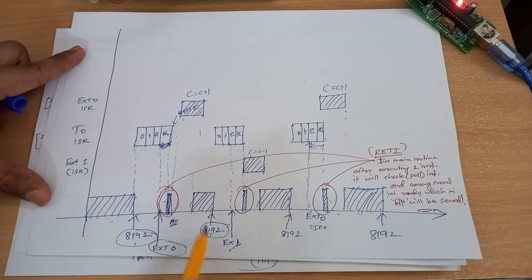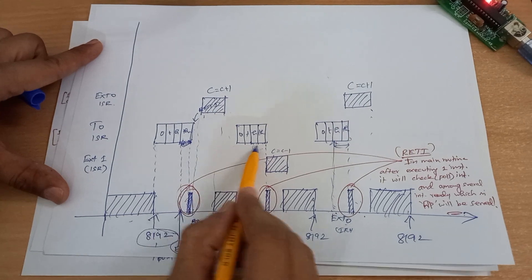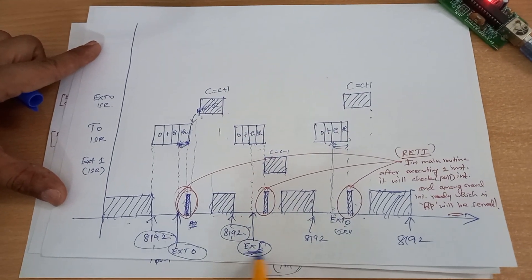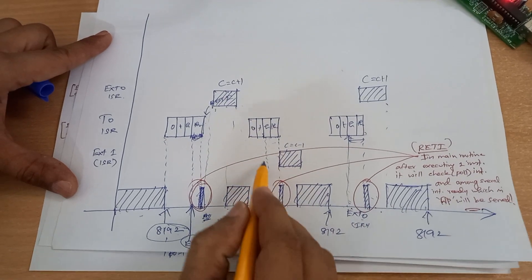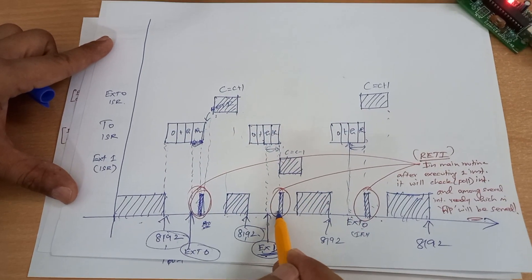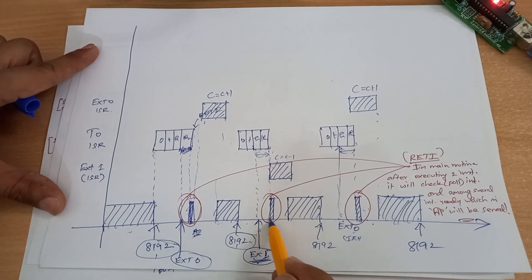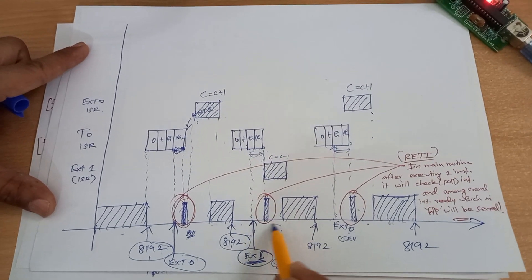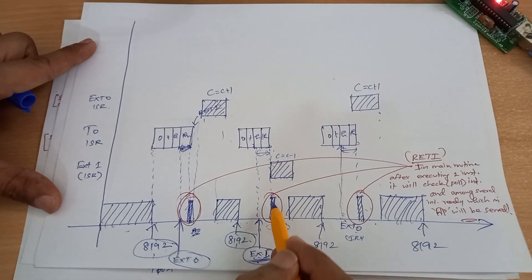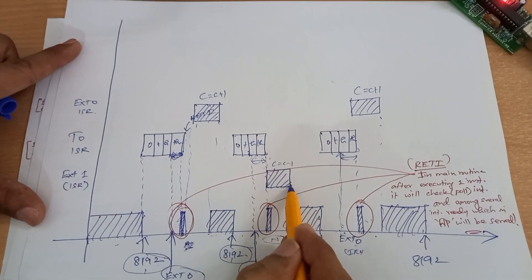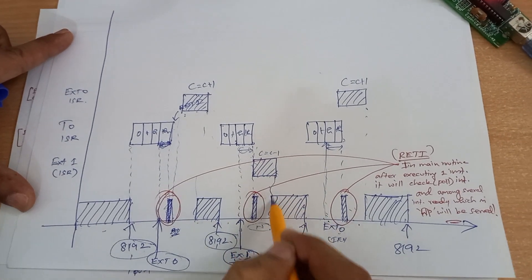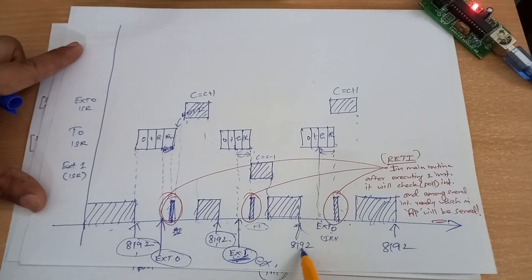When the timer interrupt comes again, while executing the timer interrupt, the lowest-priority interrupt — external interrupt 1, which is exit — gets generated. It waits until the timer interrupt returns from the ISR, then comes back to the main routine. After executing one instruction, it polls for interrupts, finds external interrupt 1 flag set, goes to the ISR, completes the external interrupt 1 by decrementing the variable, and comes back to the main routine.